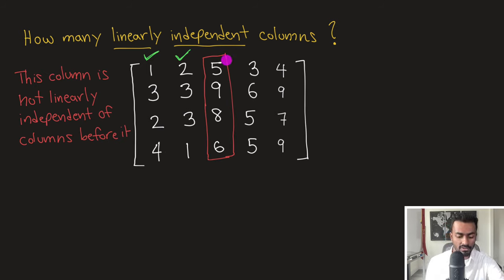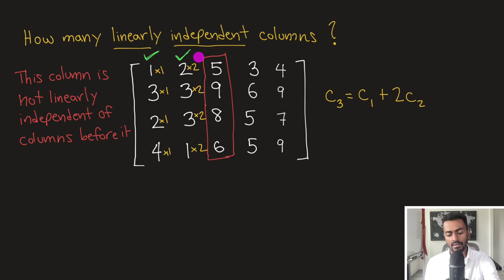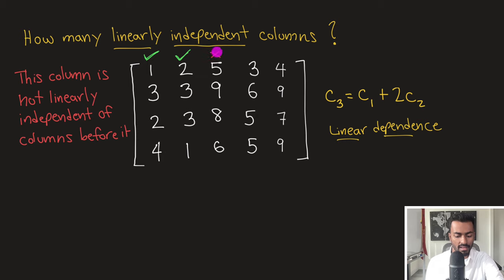Now we check the third column. We notice that this third column is not linearly independent of the columns that come before it. We can create a linear equation expressing the third column in terms of the first and second columns: the values of column 3 equal one times column 1 plus two times column 2. This establishes linear dependence, so we put an X on this column.